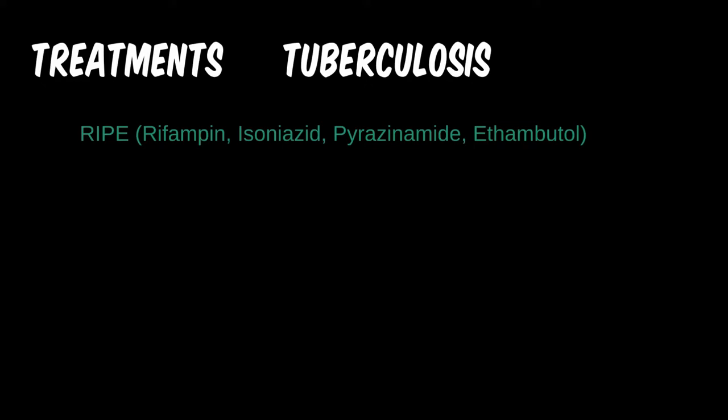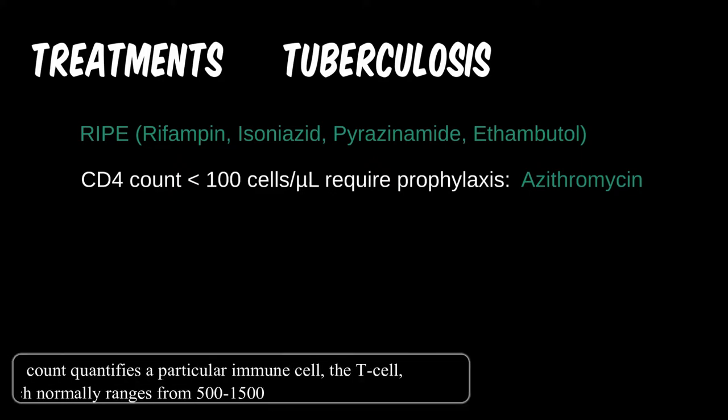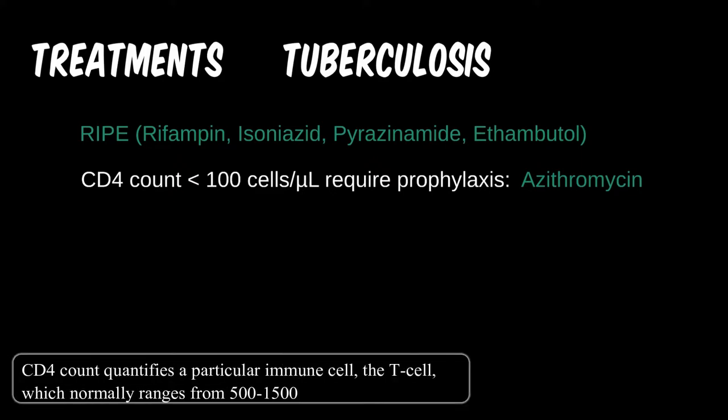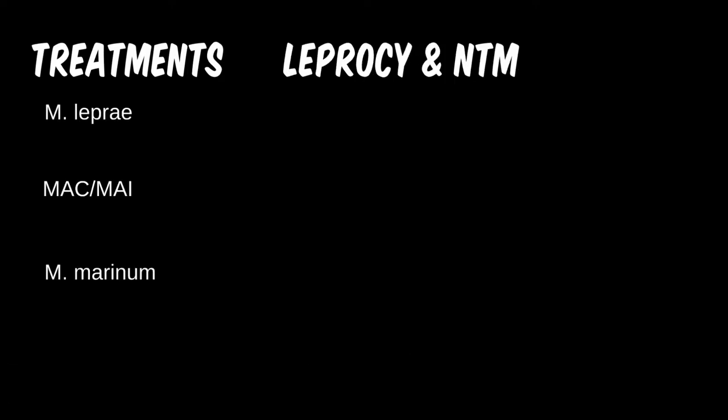For HIV patients specifically, a CD4 count of less than 100 is an indication for prophylaxis from this microbe — a macrolide like azithromycin is appropriate. Moving on to the non-tuberculous grouping: leprosy is relatively straightforward. The trifecta of dapsone, rifampin, and clofazimine is recommended, and dapsone can also be used for prophylaxis, though that need is rare.